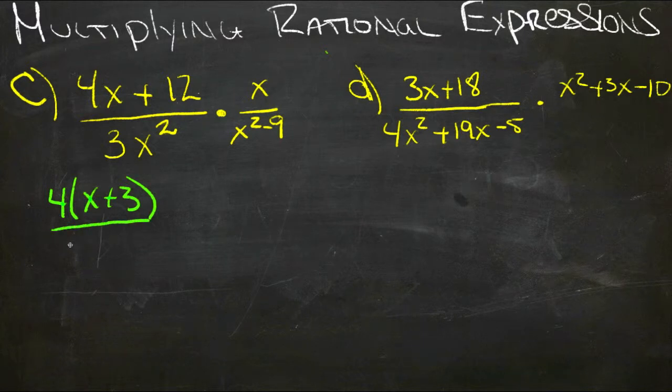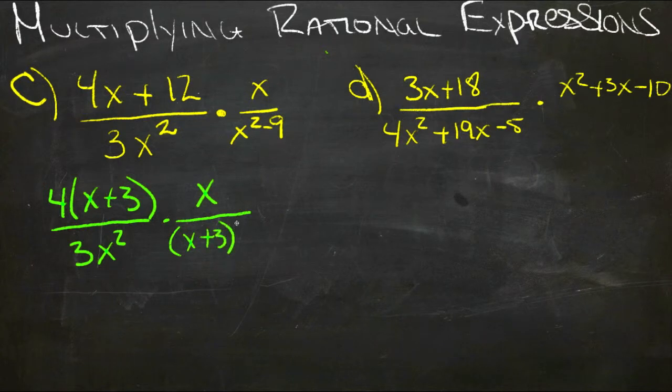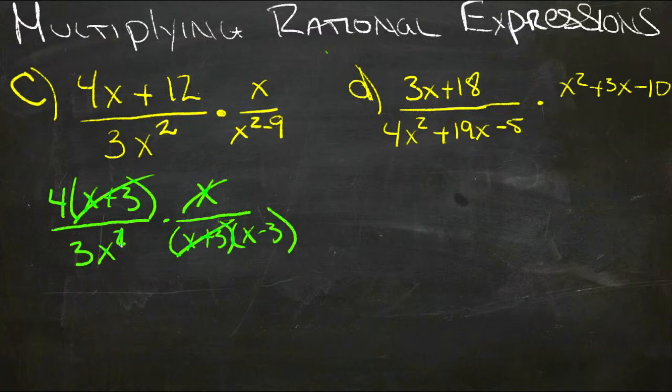And we'll keep our 3x squared down here times x over, this is the difference of squares. So this would be x plus 3 times x minus 3. So now we have an x plus 3 down here which cancels there. And we have an x which cancels with one of these.